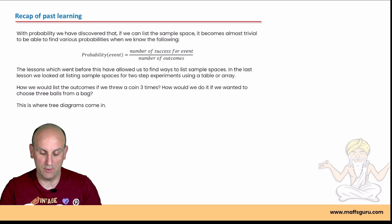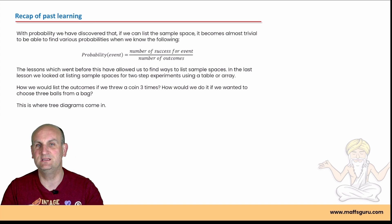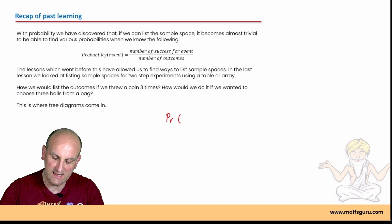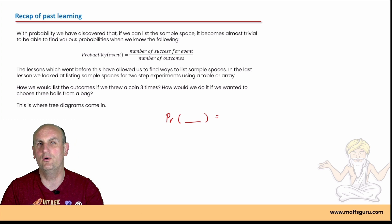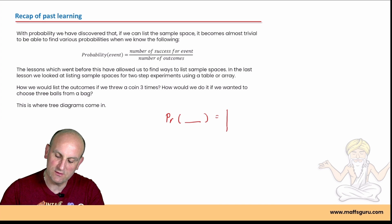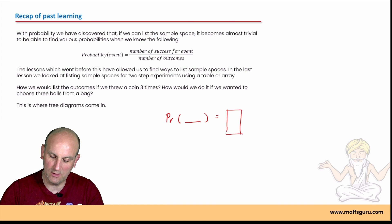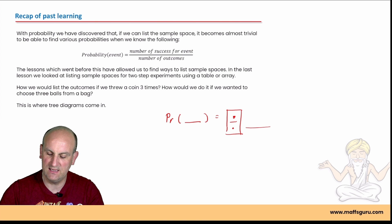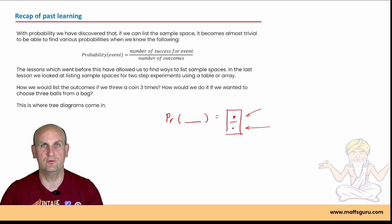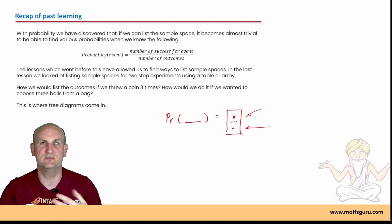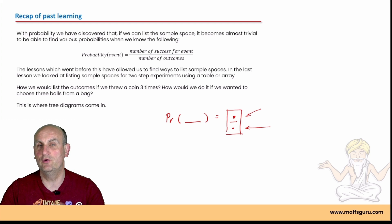We said previously: to find the probability of something we write P and in brackets we write whatever the event is — say even, odd, or greater than three — and then we get a numerical answer, maybe a fraction, decimal or percentage. As a fraction, we have a number on top of a number: the bottom is the total number of outcomes and the top is the number of outcomes for a success. That comes in really useful later.